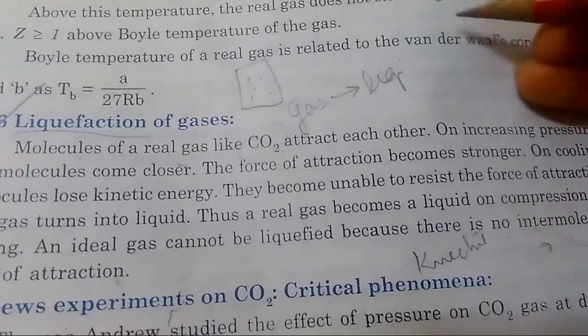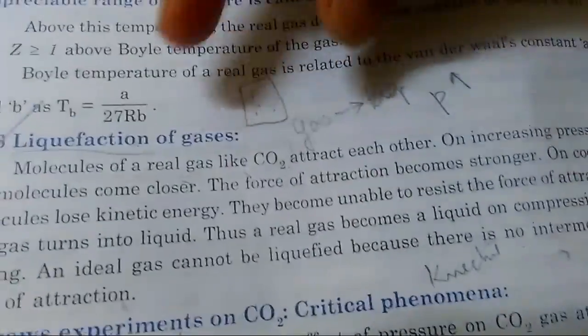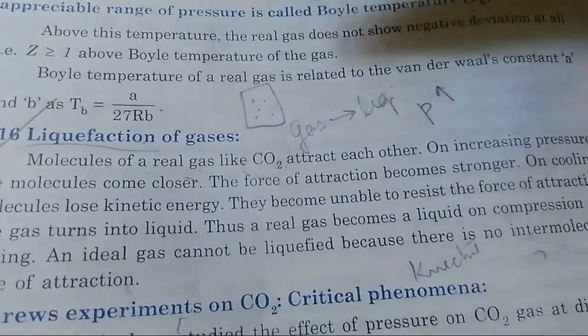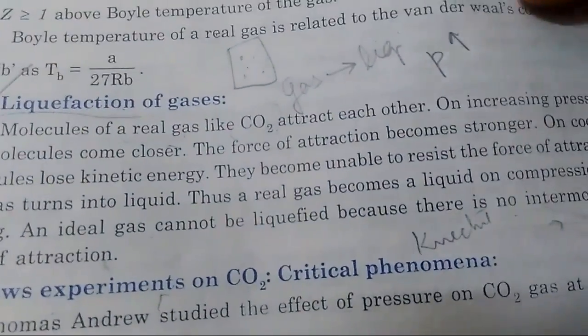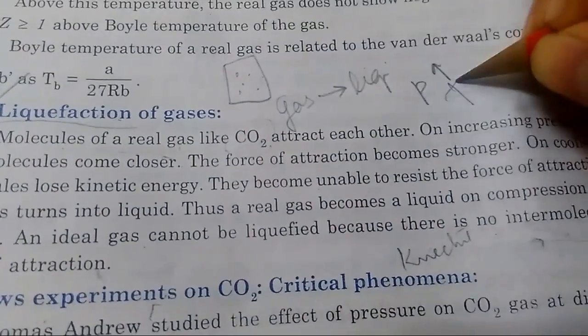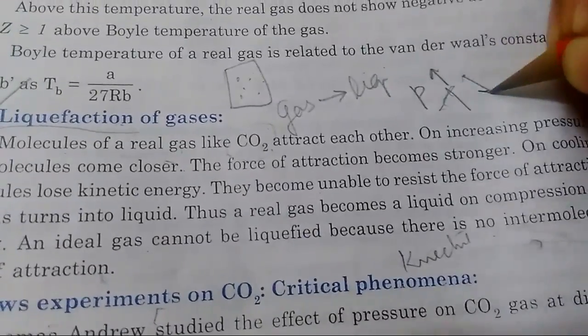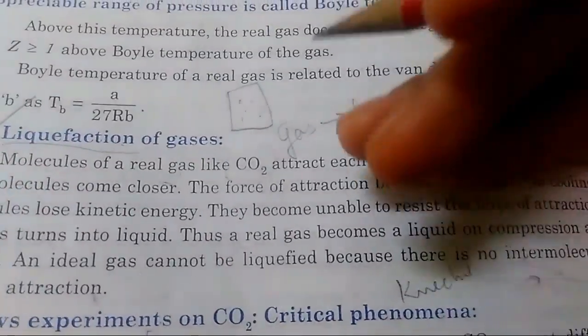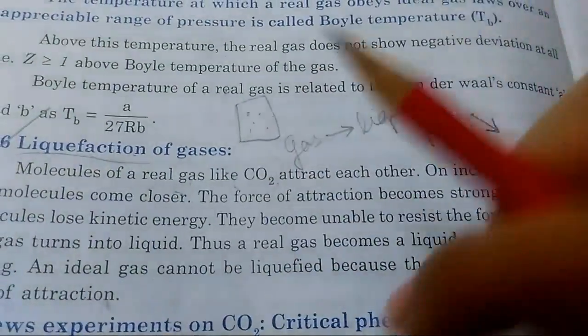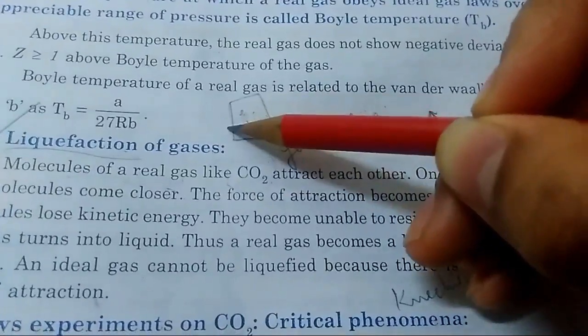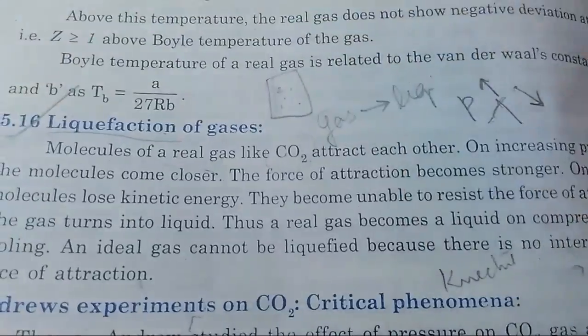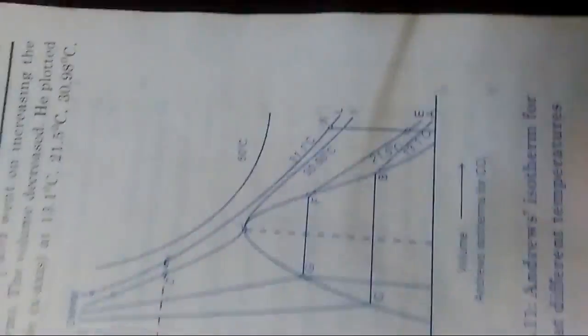The experiment is called Andrews' experiment. What are we doing? We're increasing the pressure, so all these molecules come closer to one another and would immediately form bonds. When you decrease the temperature, they would have no kinetic energy to move around. They would stop and immediately form bonds with one another, and then you can get the liquid.